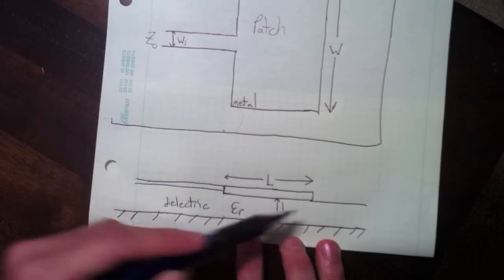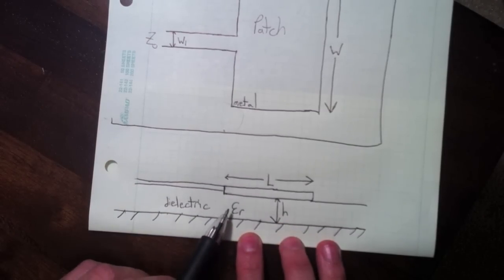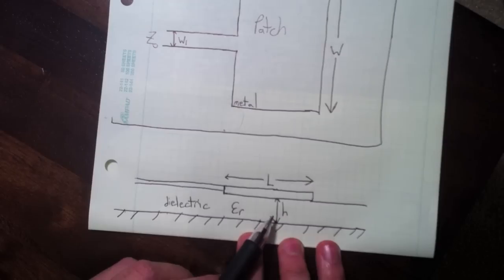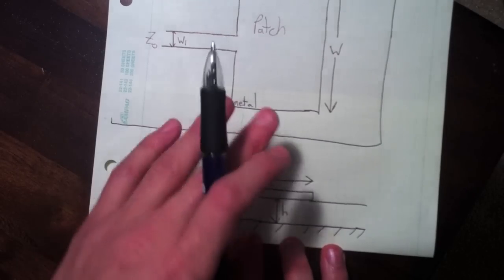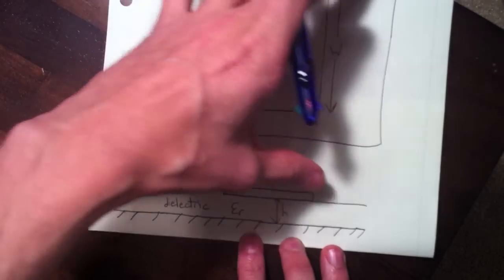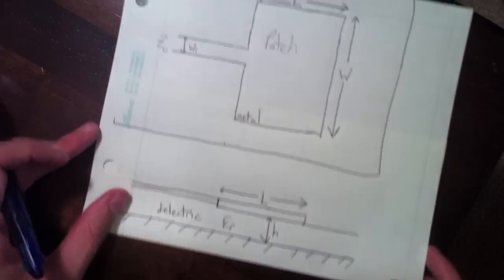We'll assume that it sits on top of a dielectric with dielectric constant epsilon R and the height is H. And the whole thing sits on top of the ground plane, which needs to be at least as large as the patch and typically a little bit beyond that as well.